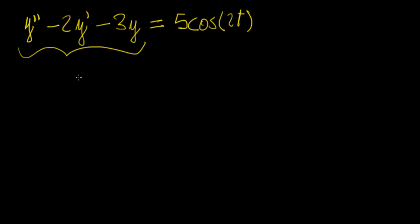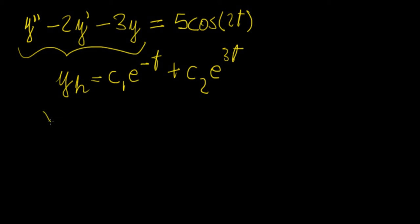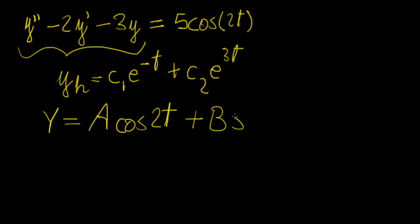So what are we going to do? Well, the homogeneous solution, as we found in the previous videos, is going to be c1·e^(−t) plus c2·e^(3t). Now to set up the particular solution y_p, we need to substitute undetermined coefficients. We can use something like A·cos(2t), but because this is a trigonometric function, we actually need to include the sine part as well. The reason is that when solving homogeneous differential equations, we can get a sum of trigonometric functions, so we assume the solution is the sum of a cosine and a sine rather than just a cosine.